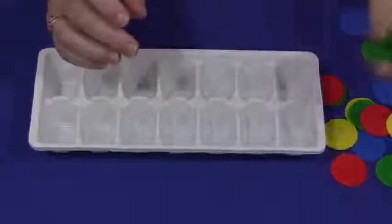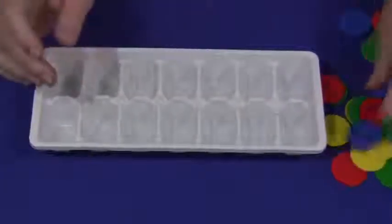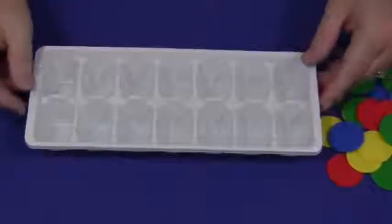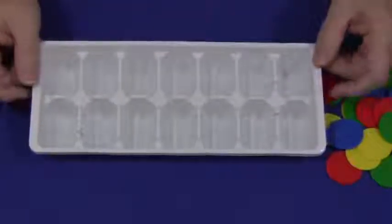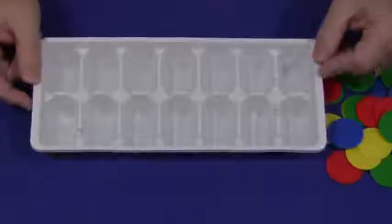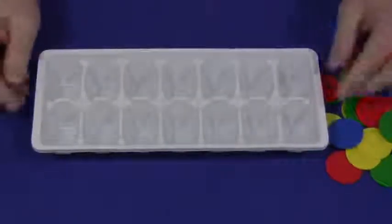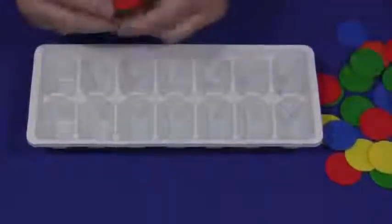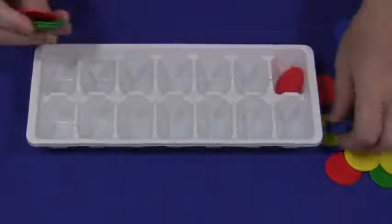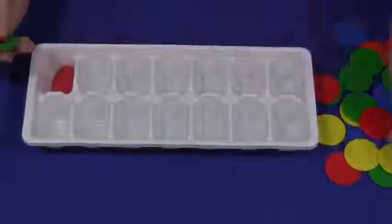So this can be done as either a child initiated or a teacher initiated activity or directed activity. And to do a teacher directed activity, each child can have their own tray and the teacher would call out and say, let's put six coins into the tray or whatever item you're using to put in the tray.